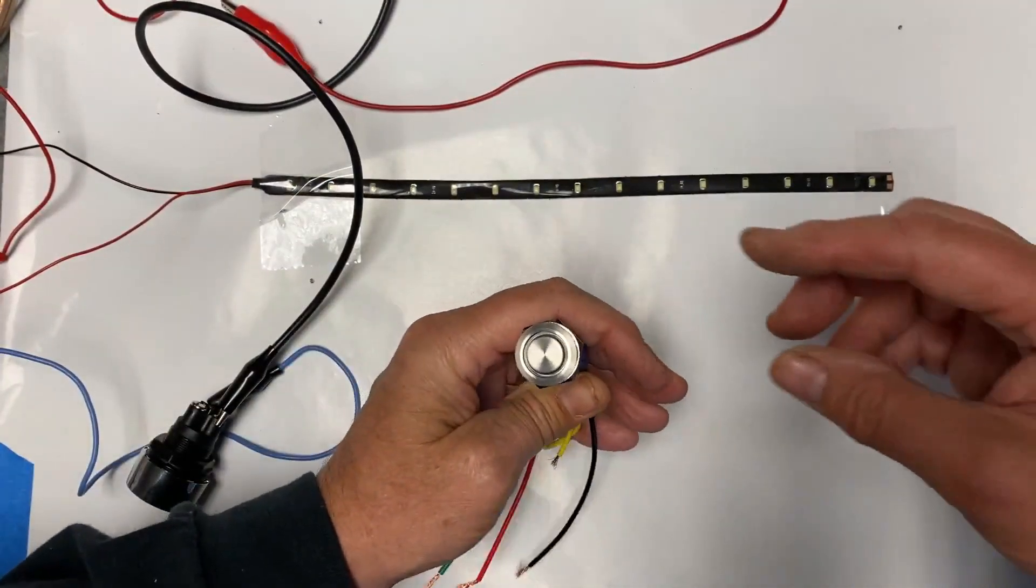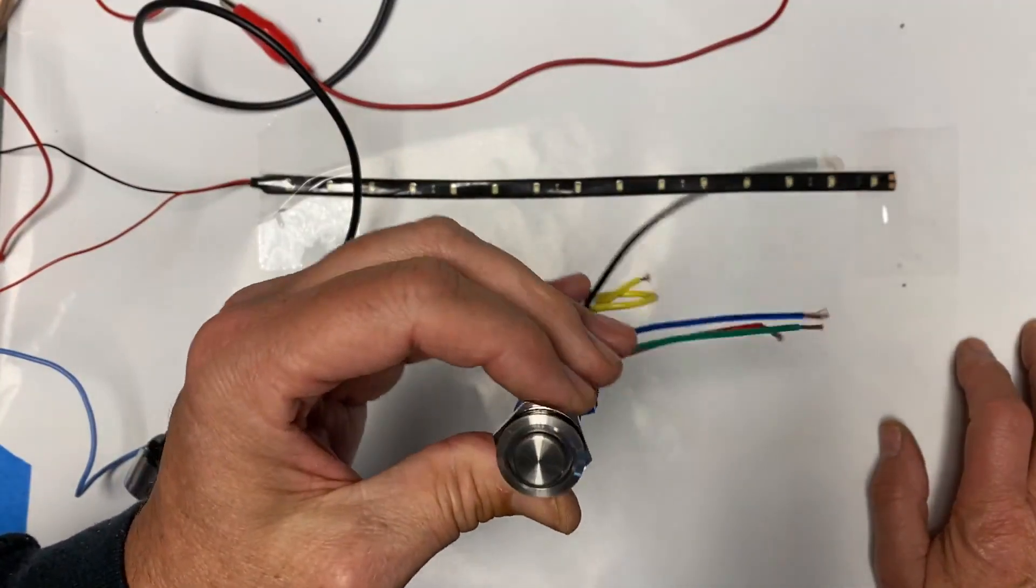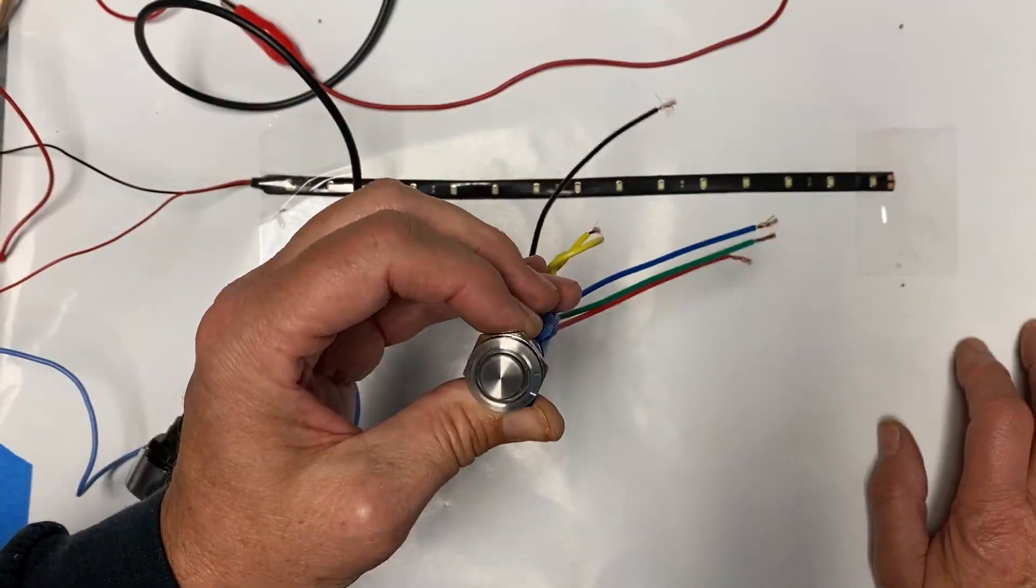This momentary switch is quite common among people who modify their Travatos. They use it quite commonly for an auxiliary water pump switch.